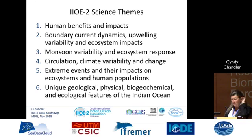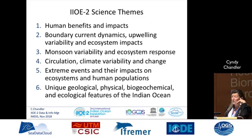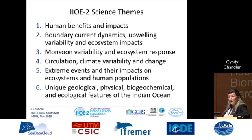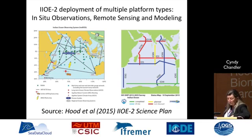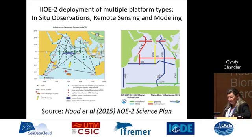There are six science themes. They start with human benefits and impacts. In the Indian Ocean Basin, this is really important — the countries that border the Indian Ocean all have a vested interest in understanding their natural environment; it's critical to their cultural identity and also their economic success. But also boundary current dynamics, monsoon variability, circulation and climate variability, extreme events like monsoons but also tsunamis, and then the unique geoscience and ecological features. The Indian Ocean Basin is a fascinating place to do research with a lot of things going on that don't happen anywhere else on the planet. The IIOE2 science plan, which is available online, is cited in the speaker notes.